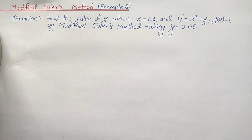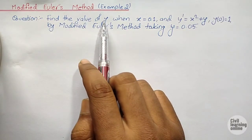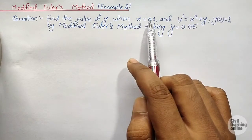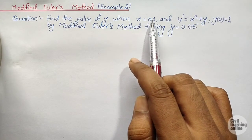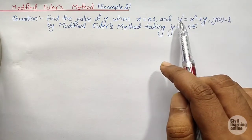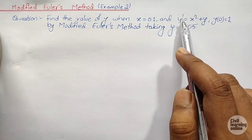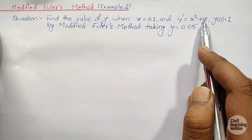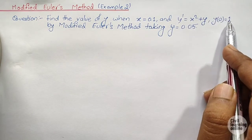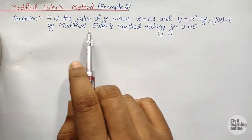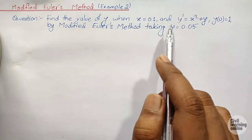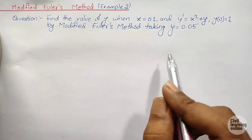The question is: find the value of y when x equals 0.1, and y dash (dy/dx) equals x squared plus y, y₀ equals 1, by Modified Euler's Method, taking h equals 0.05.